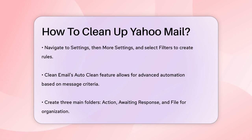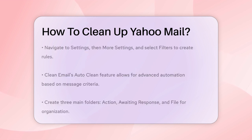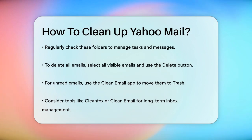For a more organized approach, you can use the three-folder method. Create three main folders: Action, Awaiting Response, and File. Move messages that require action to the Action folder, messages you're waiting for a response to the Awaiting Response folder, and messages you might need to refer to later to the File folder. Regularly go through these folders to complete tasks, delete messages, or move them to the File folder if they no longer require action or a response.